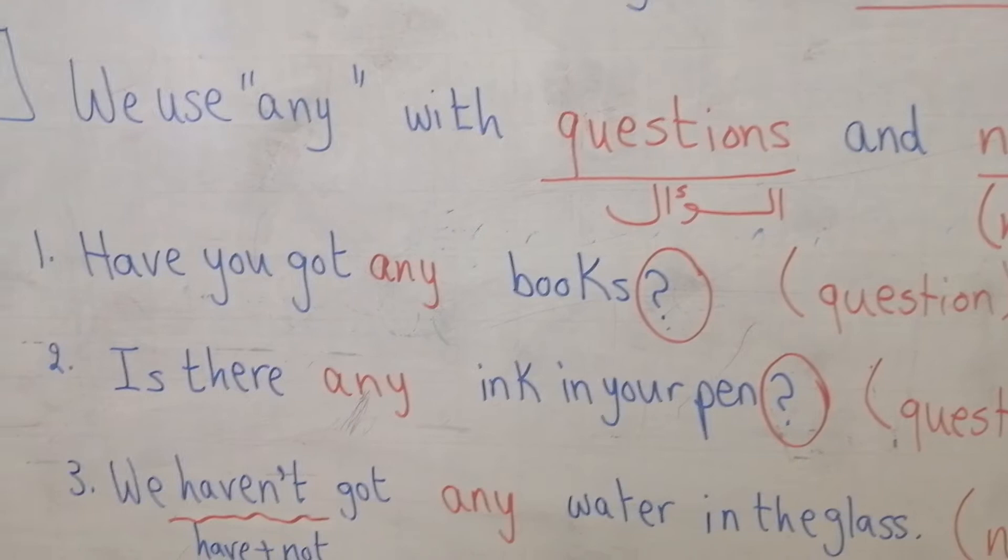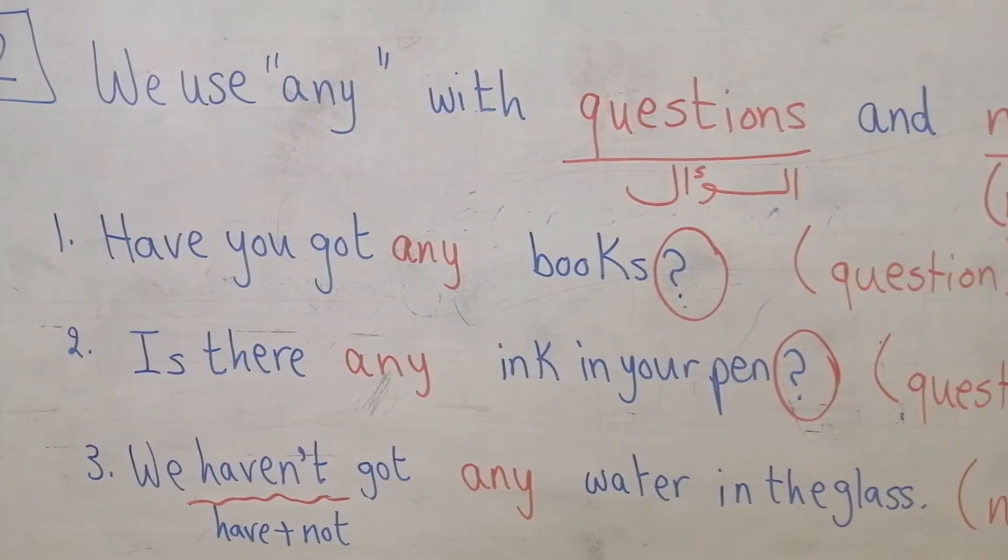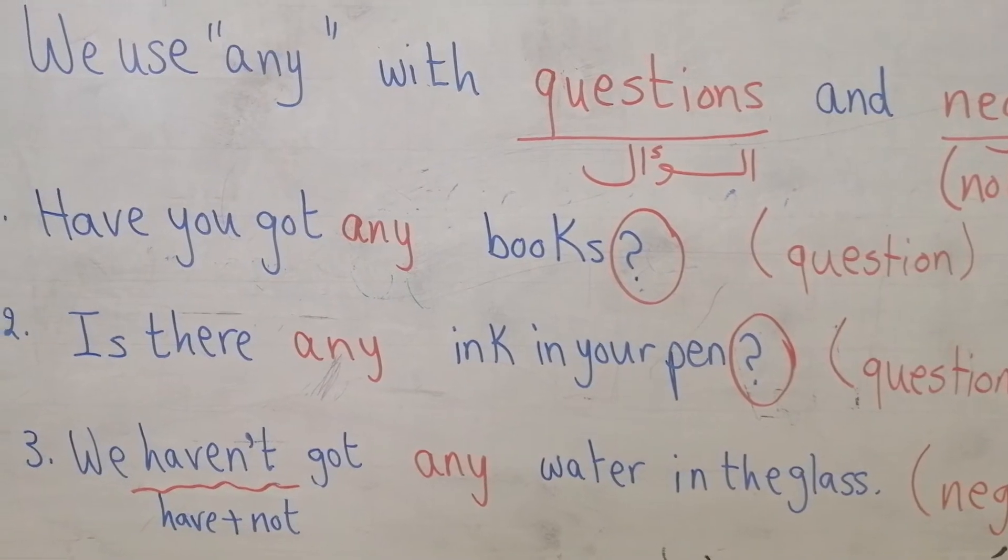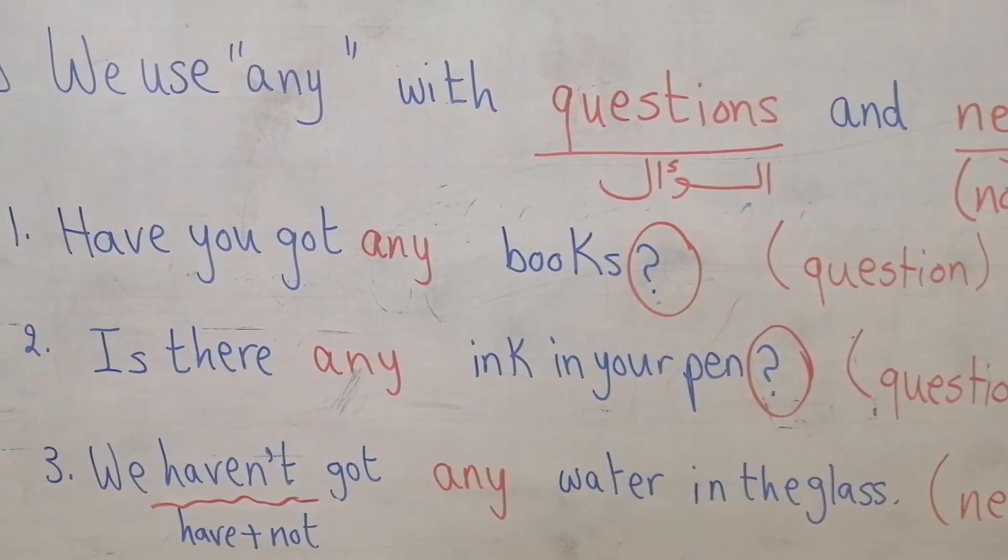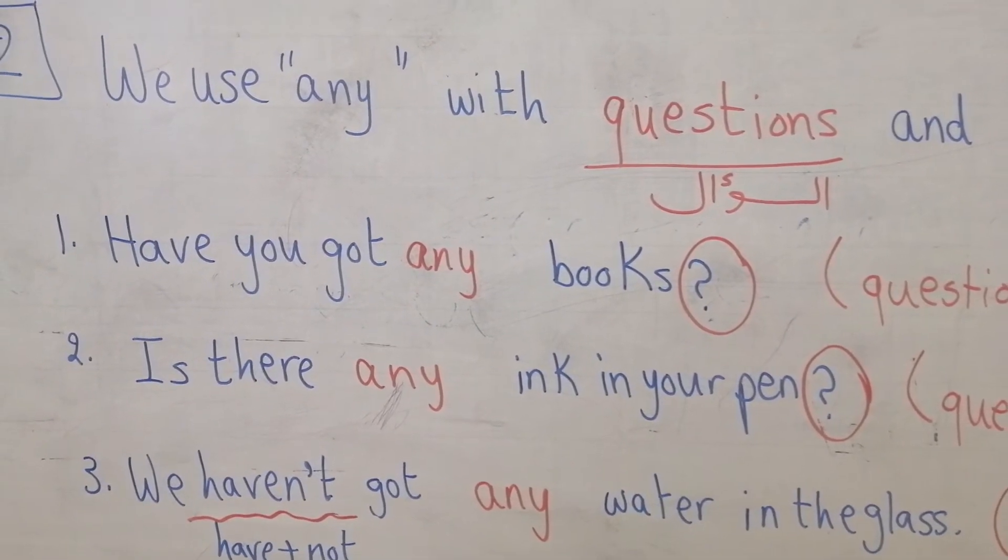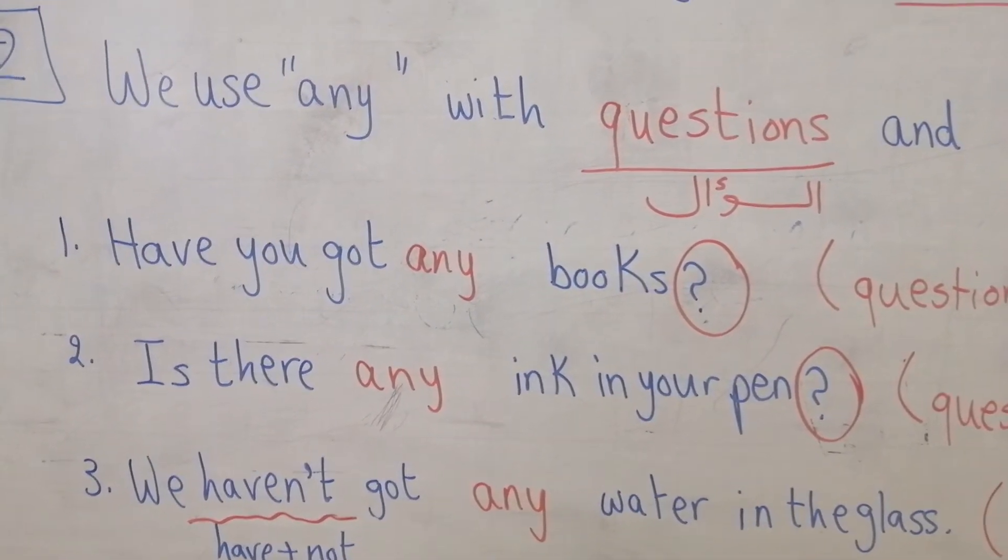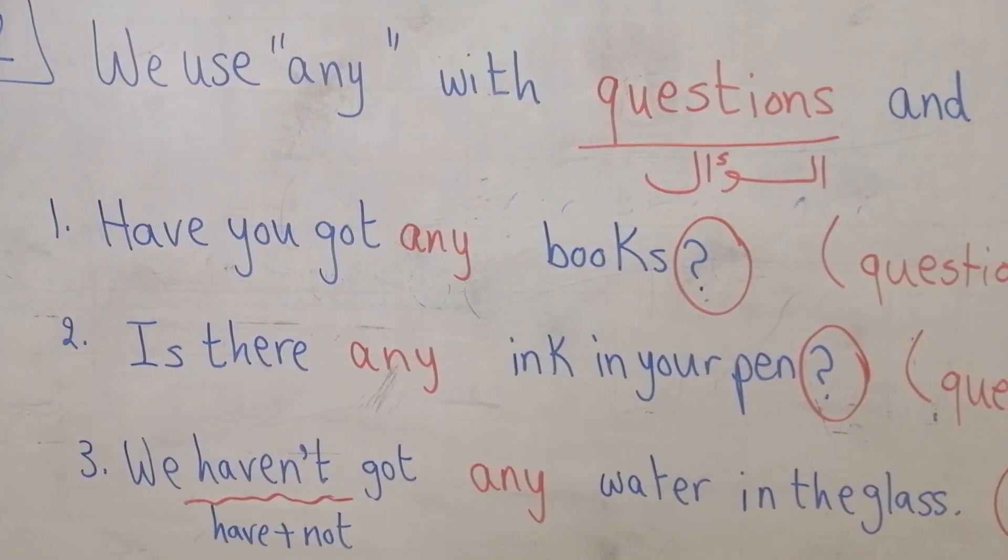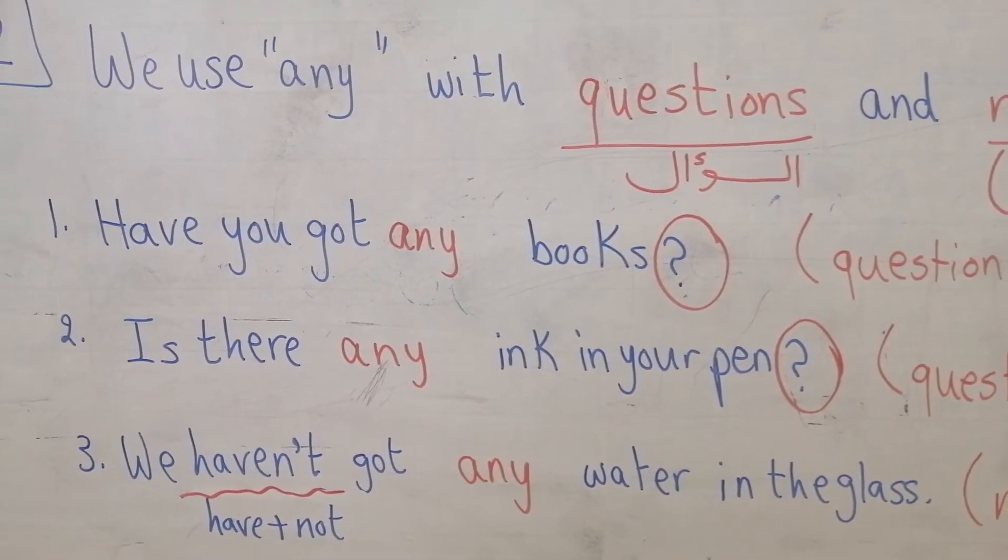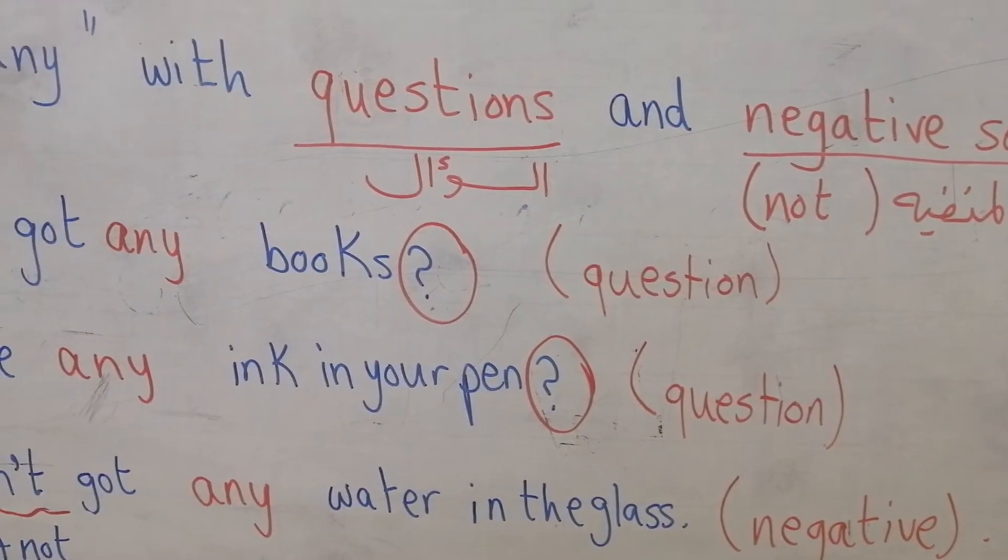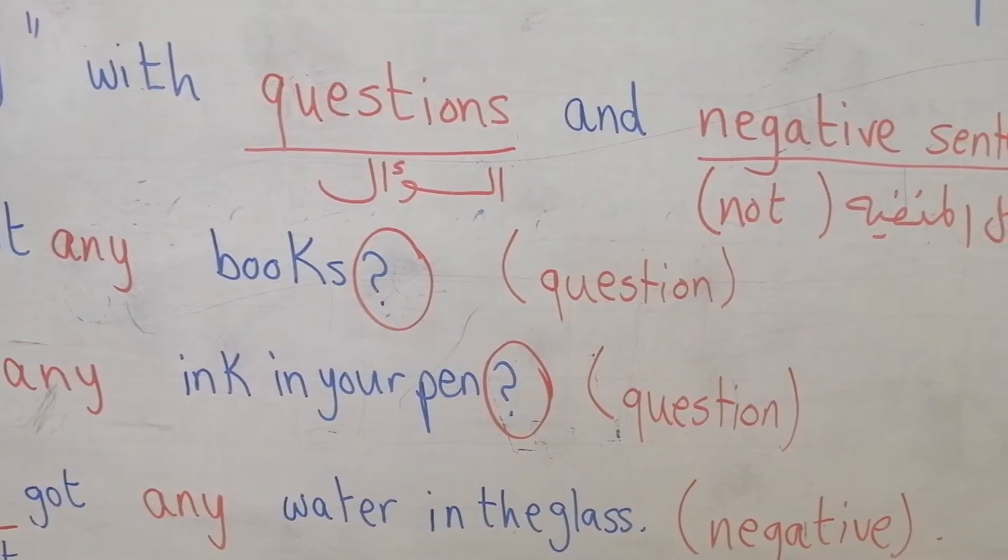What about third? We haven't got any water in the glass. If we look back at the verb haven't got, haven't got here is a negative verb because we have the verb have with not and it is a negative sentence, so we put any with it.